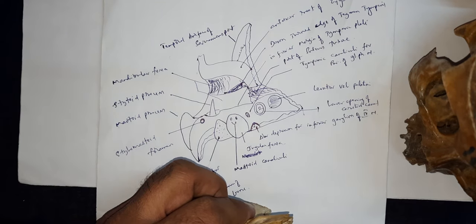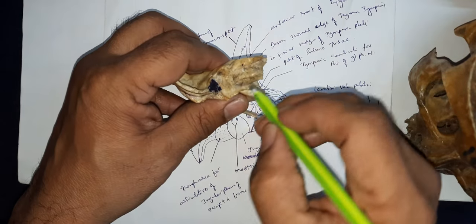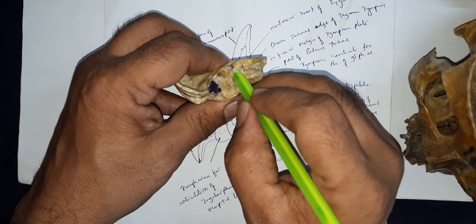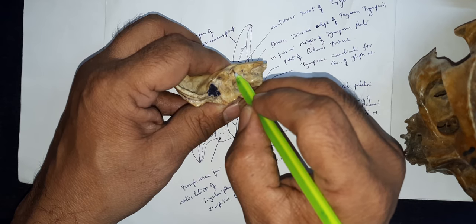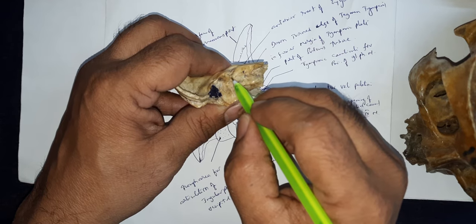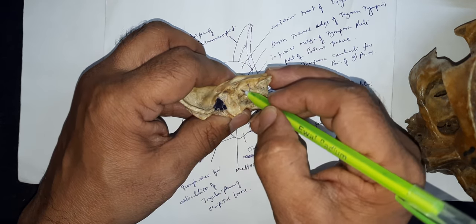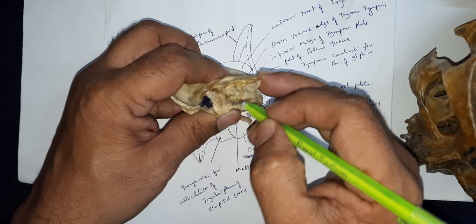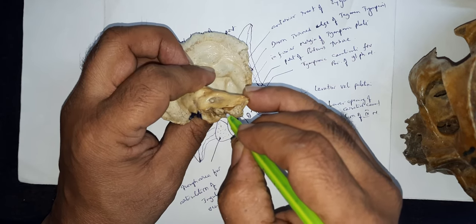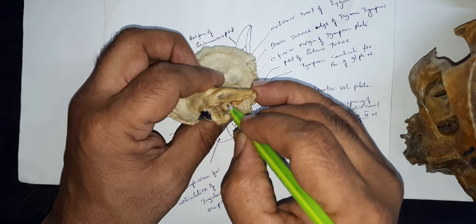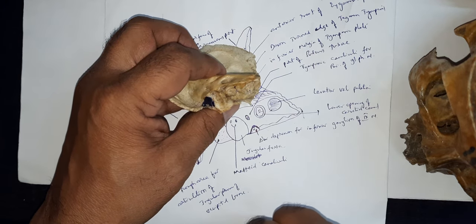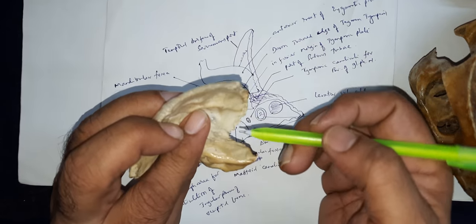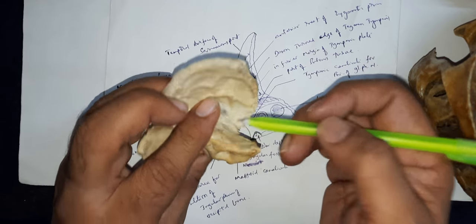This triangular impression is for the inferior ganglion of the glossopharyngeal nerve. It gives a tympanic branch which passes through this tympanic canaliculus. This tympanic canaliculus leads into the tympanic cavity, where it forms the tympanic plexus. From that, the lesser petrosal nerve comes out through the lateral opening.